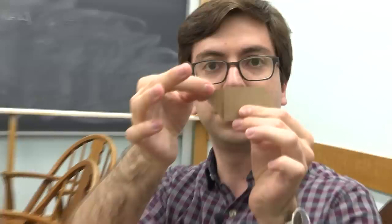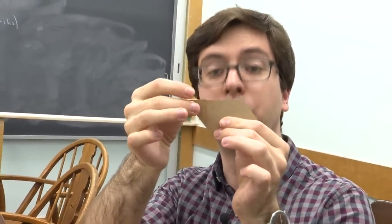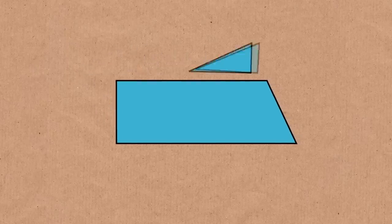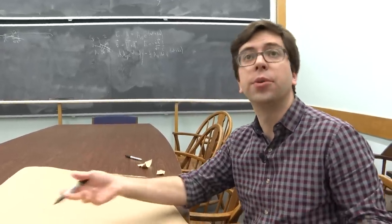Then you can cut up P1 with finitely many straight lines and rearrange the pieces to get P2. So here's an example of a polygon which I've already pre-cut, it's a parallelogram, and here's how you can rearrange it into a rectangle with the same area. Just move this triangle over here. So the proof actually gives you an algorithm for cutting up a polygon and decomposing it into another one.